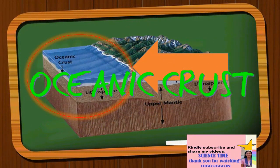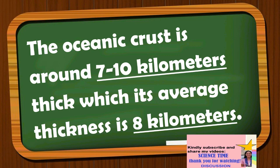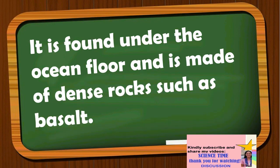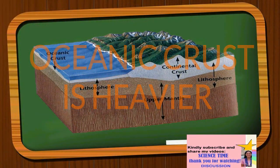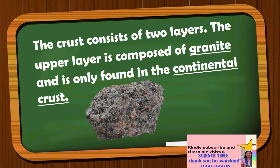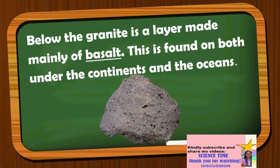The oceanic crust is around 7 to 10 kilometers thick, with an average thickness of 8 kilometers. It is found under the ocean floor and is made of dense rocks such as basalt. The oceanic crust is heavier than the continental crust. The crust consists of two layers: the upper layer is composed of granite and is only found in the continental crust, while below the granite is a layer mainly of basalt, found under both continents and oceans.